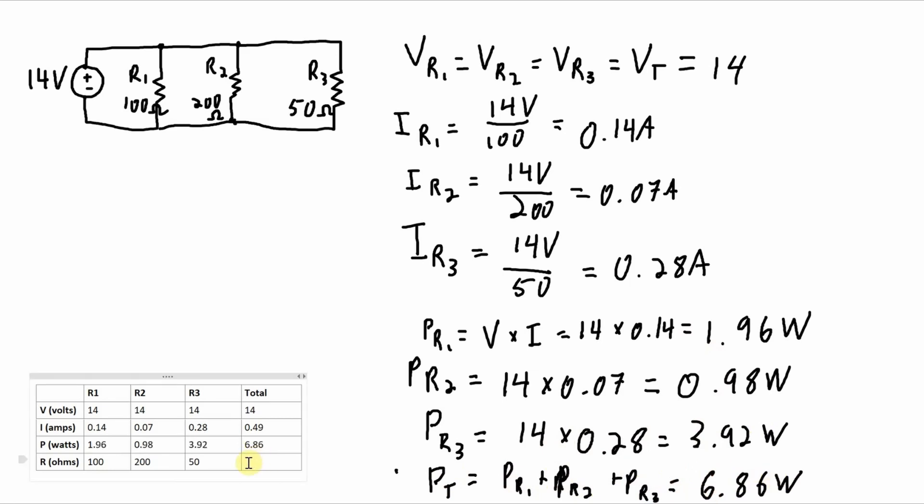And the total power will come from summing up these three powers. And one thing that I haven't calculated is the total resistance seen from the voltage source, because I didn't actually need it for any of my other calculations. But just for completeness, let's do it here. It's going to be 1 over 100 plus 1 over 200 plus 1 over 50 to the minus 1.